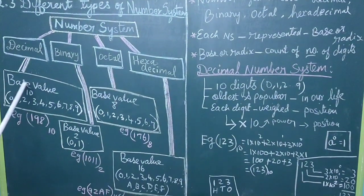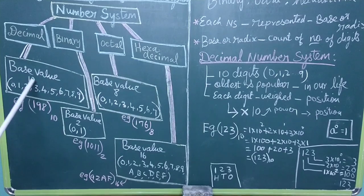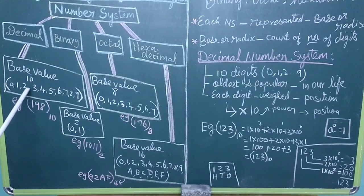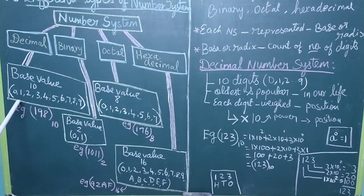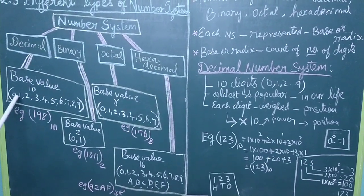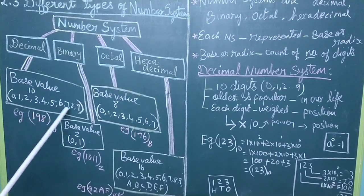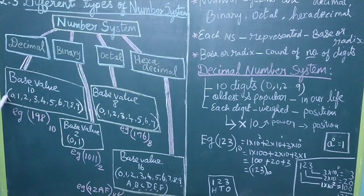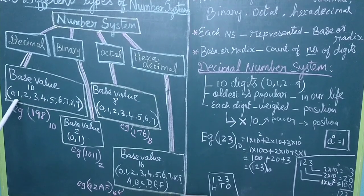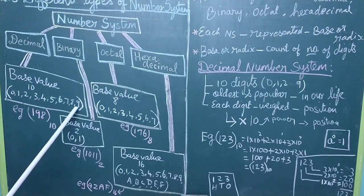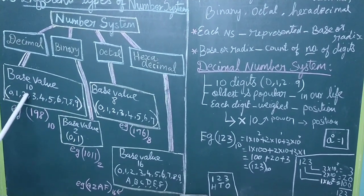The decimal number system's base value is 10. That is, 10 numbers are used in the decimal number system: 0, 1, 2, 3, 4, 5, 6, 7, 8, 9. All together, how many numbers? 10 numbers. See 1 to 9 — that is 9 numbers — plus 0, makes 10 numbers.